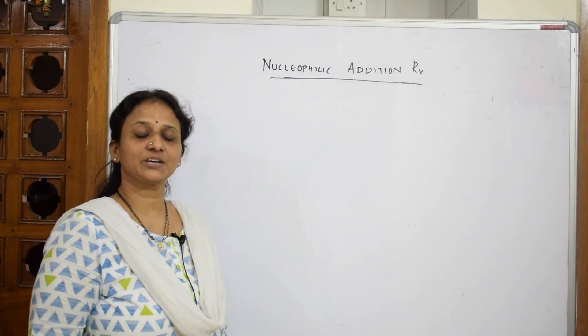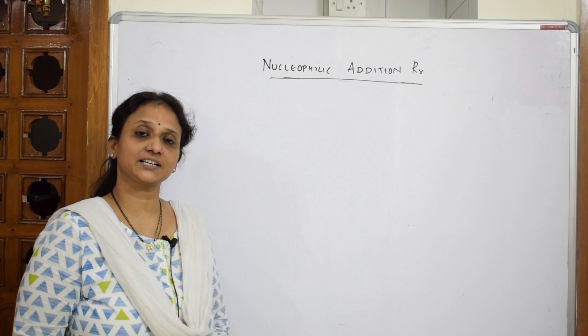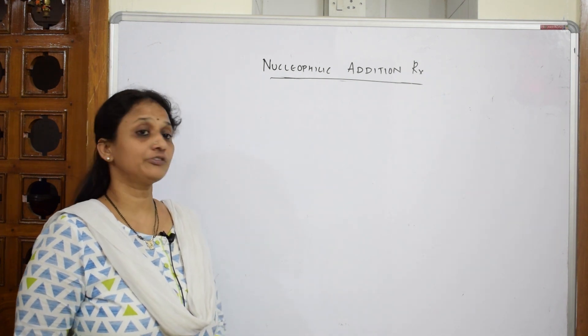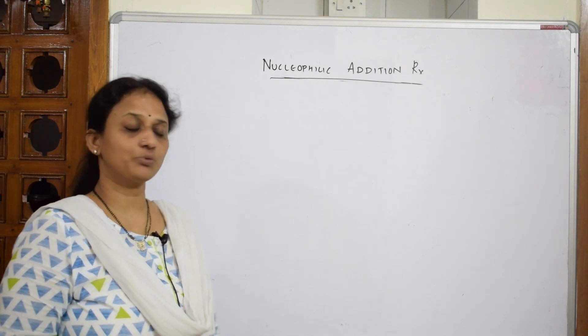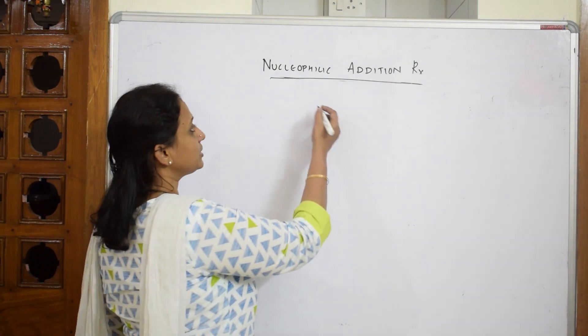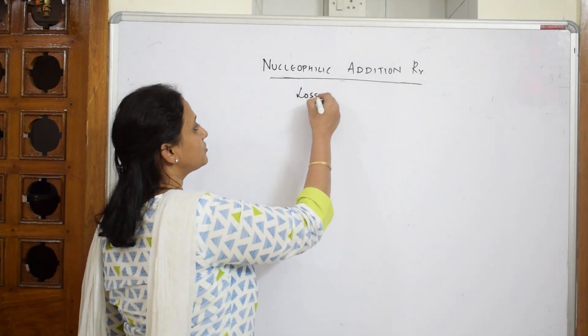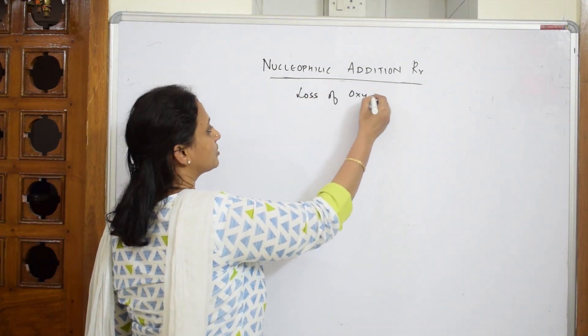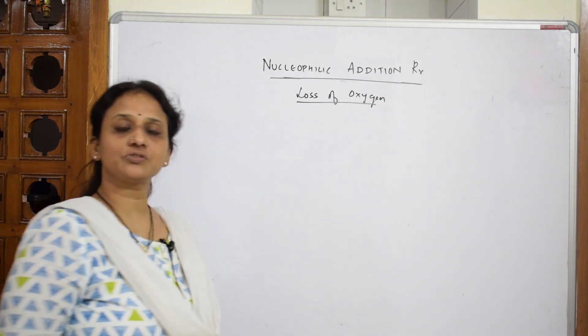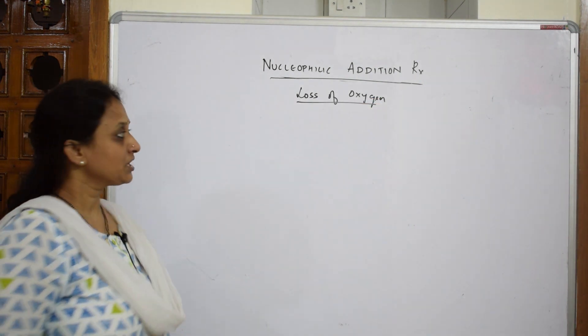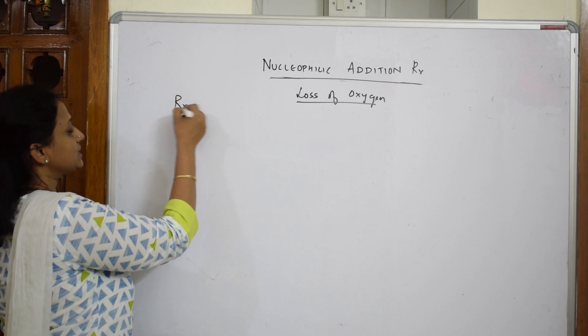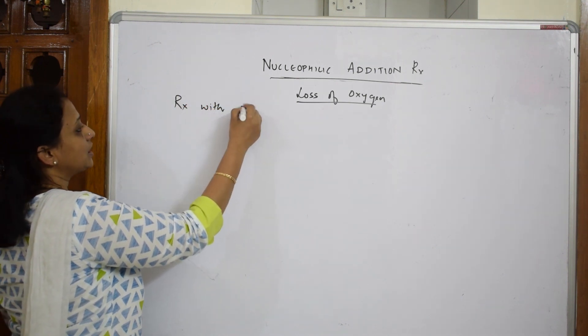Let us come back. Now we are going to start with the second class of reactions - nucleophilic addition reactions. What is important here? This is going to involve loss of oxygen. We are going to show the loss of oxygen which always comes out as water. The first reaction we are going to see is reaction with ammonia.